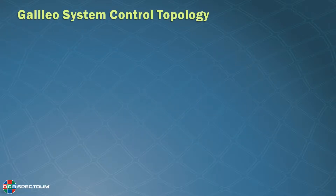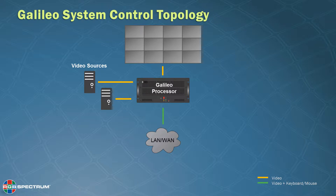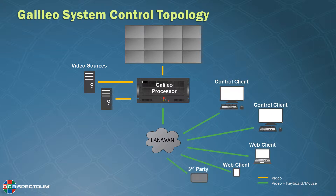The Galileo system control topology begins with the Galileo processor, connected to your video wall. Also connected are video sources via direct or baseband video inputs. The processor is connected to a local area network, a LAN, or a wide area network, known as a WAN. This allows control from the Galileo control clients, the built-in web client, or even a third-party controller.